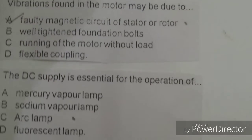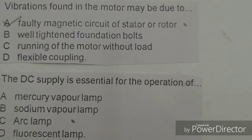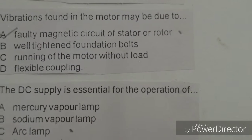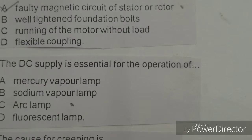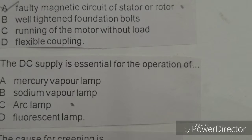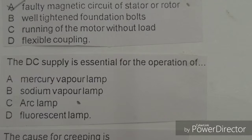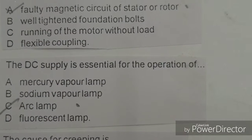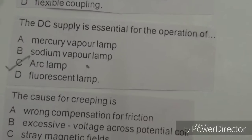Next objective: DC supply is essential for the operation of. Options given: mercury vapor lamp, sodium vapor lamp, arc lamp, fluorescent lamp. The right answer is C, arc lamp. An arc lamp requires DC supply.